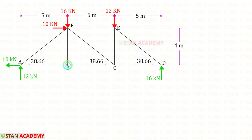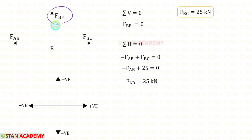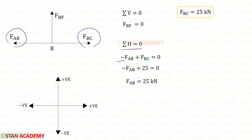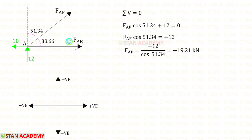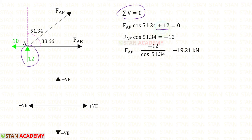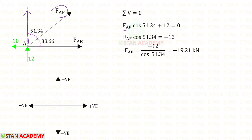Now let us take joint B. In the vertical direction, we have only one member, FBF, so that will be 0. Applying Sigma H = 0: FBC is acting towards the left side so it will be negative, and FAB is acting towards the right side so it will be positive. For FAB, we will get 25 kN. Now we are going to take joint A. FAB we have already found. We have to find only FAF. Using Sigma V = 0, VA is acting upwards so it will be positive. FAF is inclined; to resolve it in the vertical direction we need 51.34°, so we multiply FAF with cos 51.34°. Since it is acting upwards it will be positive. For FAF, we will get minus 19.21 kN.